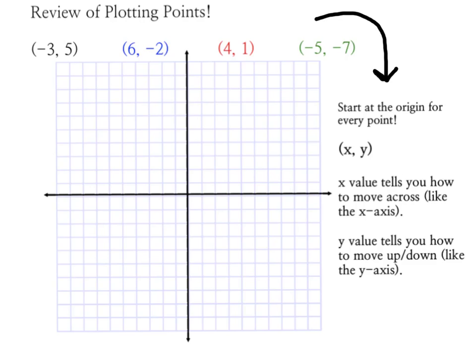Every ordered pair has an x value and a y value. The x value tells how to move across starting at the origin, just like the x axis moves across. Our y value in the ordered pair tells us how to move up or down, just like the y axis goes up or down.